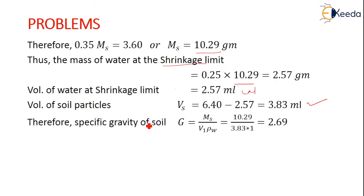The specific gravity of soil is given as Ms by V1 into ρw. Ms is 10.29 from our calculation. V1 is 3.83. ρw is 1 gram per cc. After calculation, we get it as 2.69. It is a ratio, hence it has no units.